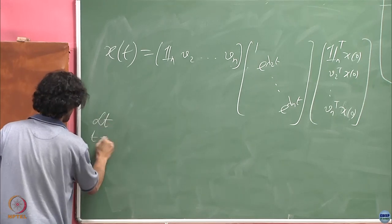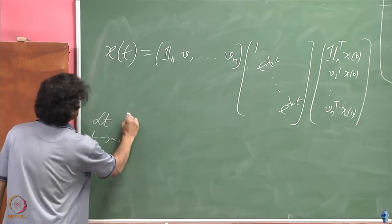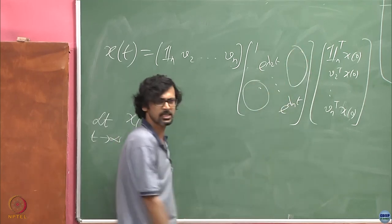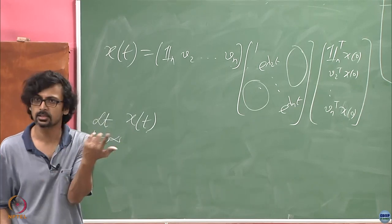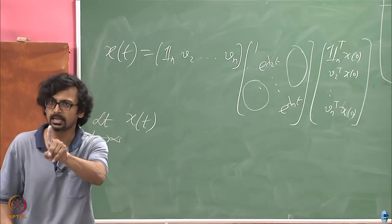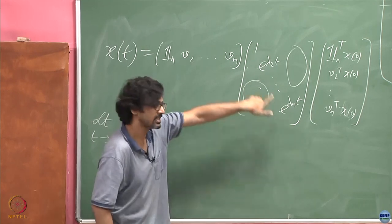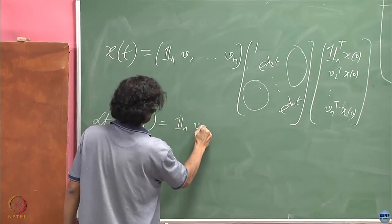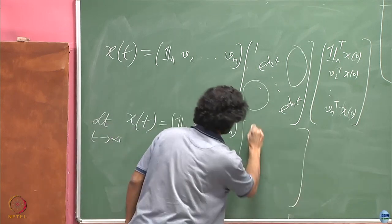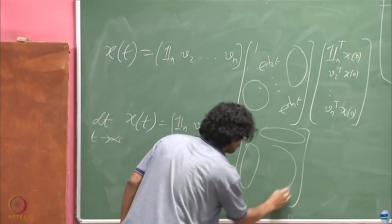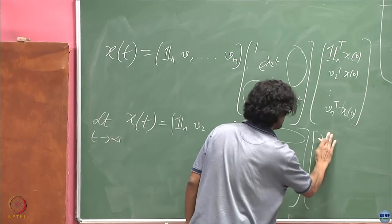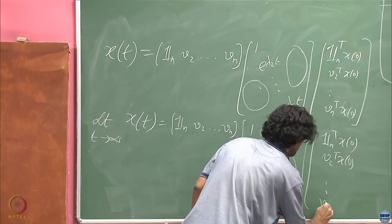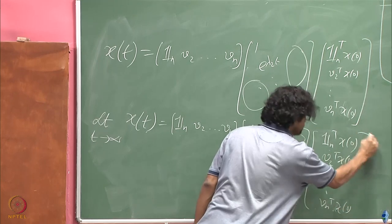This is true of any general matrix. Here I just happen to know that one of the eigenvalues is 0 and its corresponding eigenvector is this. Apart from that I also know that the other eigenvectors form an orthogonal basis. So that is all the knowledge I have used. Let us write it out now. So x(t) is going to be [all ones, V_2, until V_n] times [1, e^{lambda_2 t}, ..., e^{lambda_n t}]. The lambdas are the eigenvalues of minus L, remember, not L, because our dynamics was governed by minus Laplacian, not Laplacian.